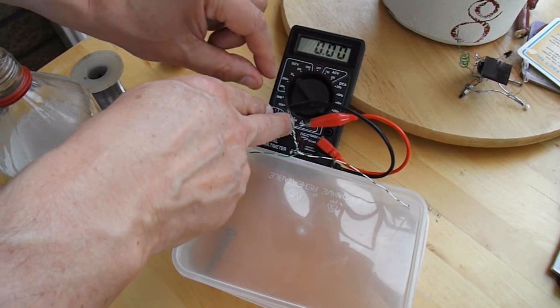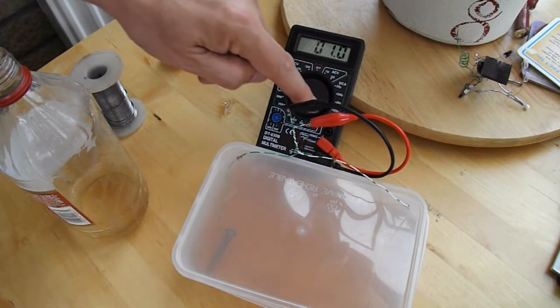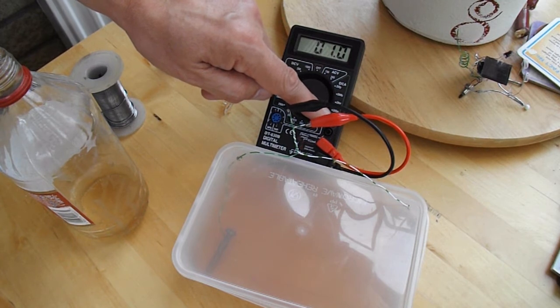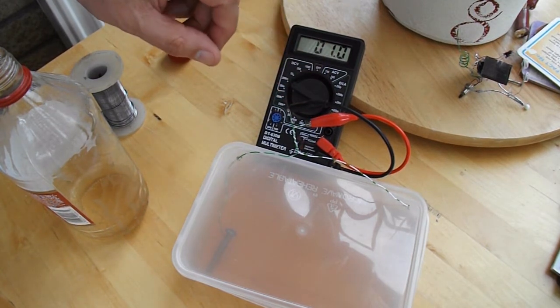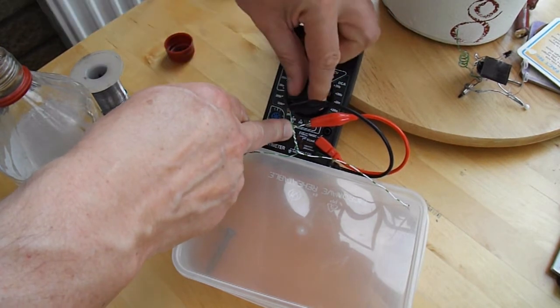About 1 amp. That can't be an amp, can it? Milliamps we're talking, aren't we? Yeah, that's the 200 milliamp scale. So we're getting about 1 milliamp out of there at the moment. It's dropping a bit. We're getting something out of there.